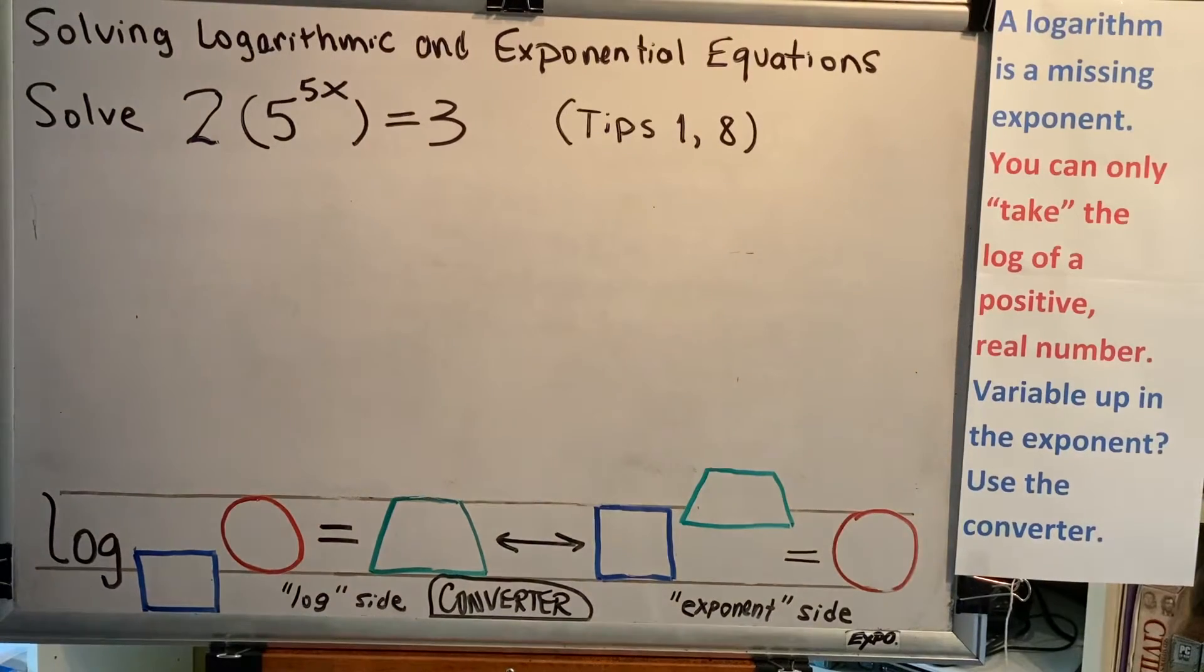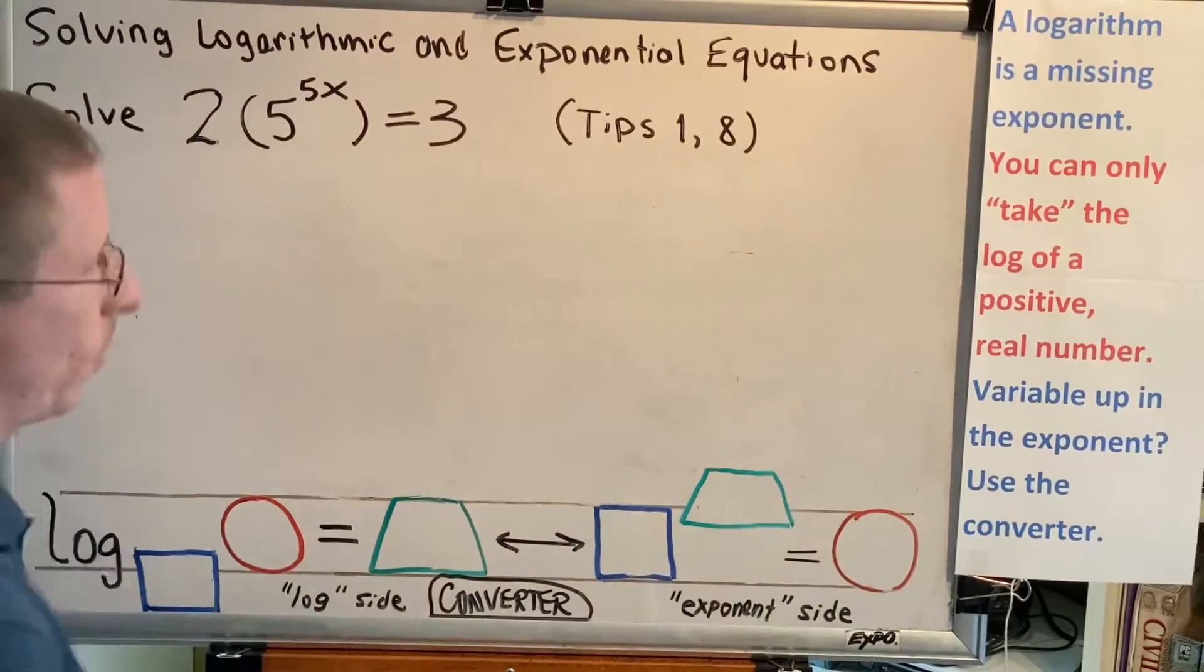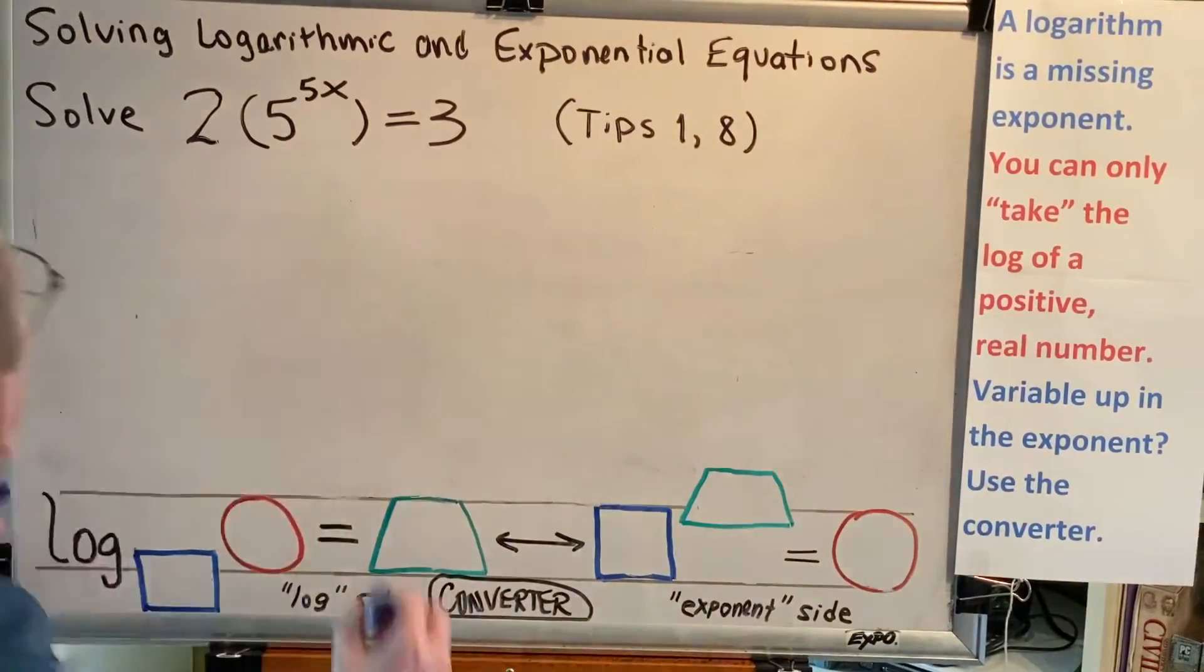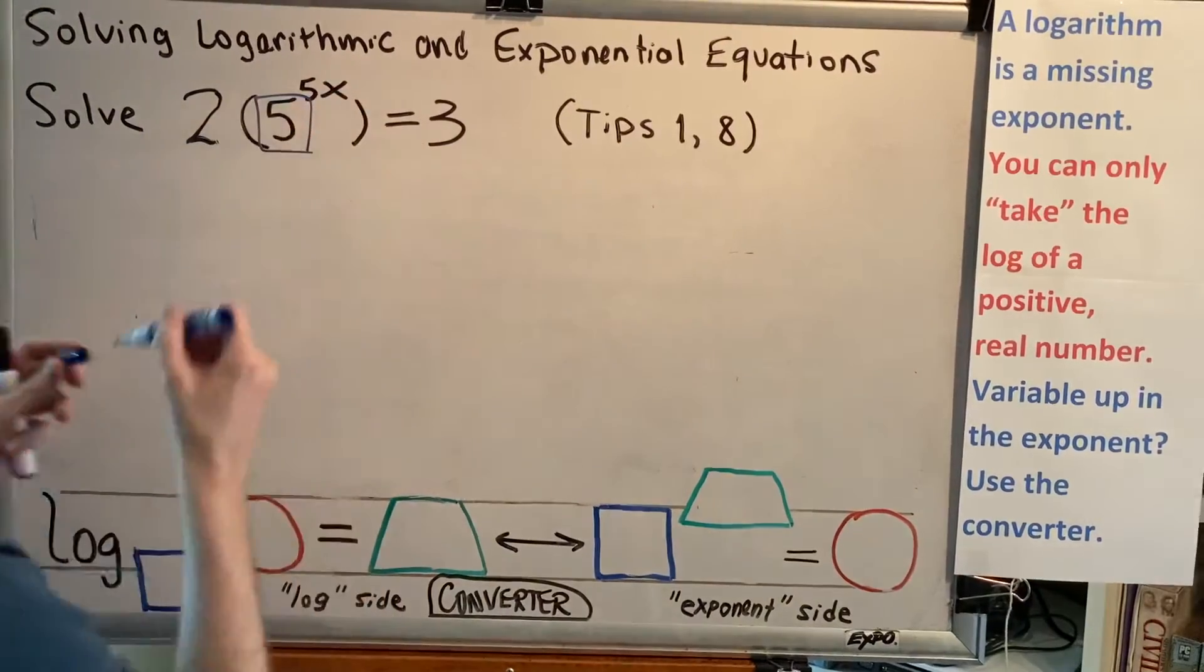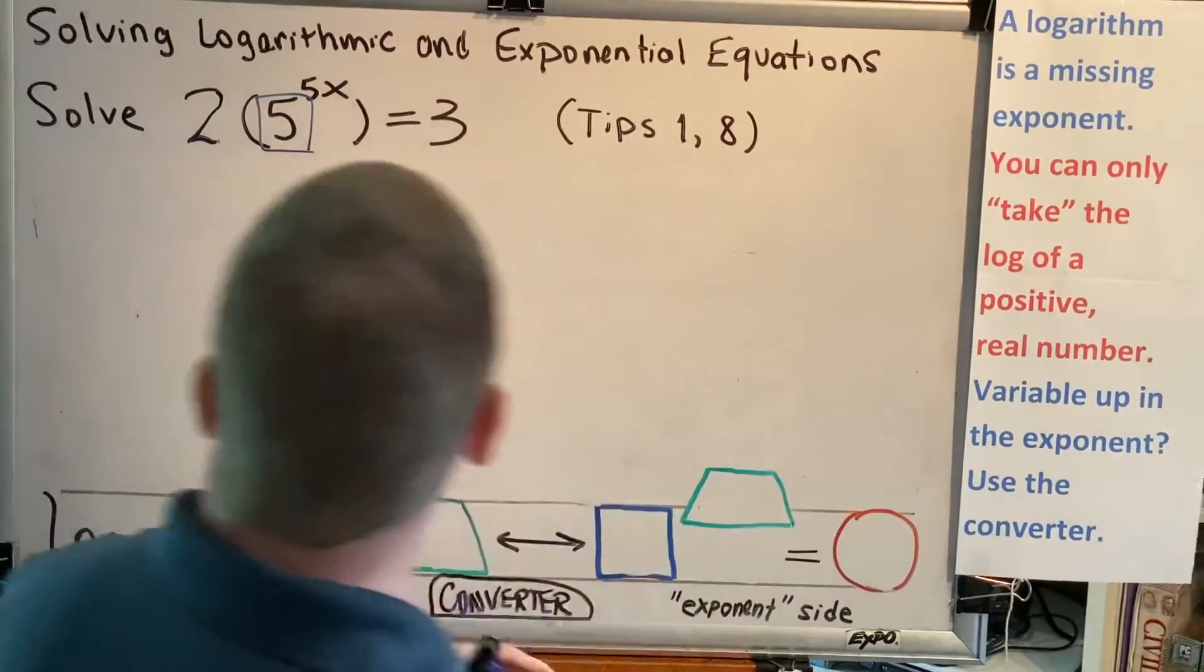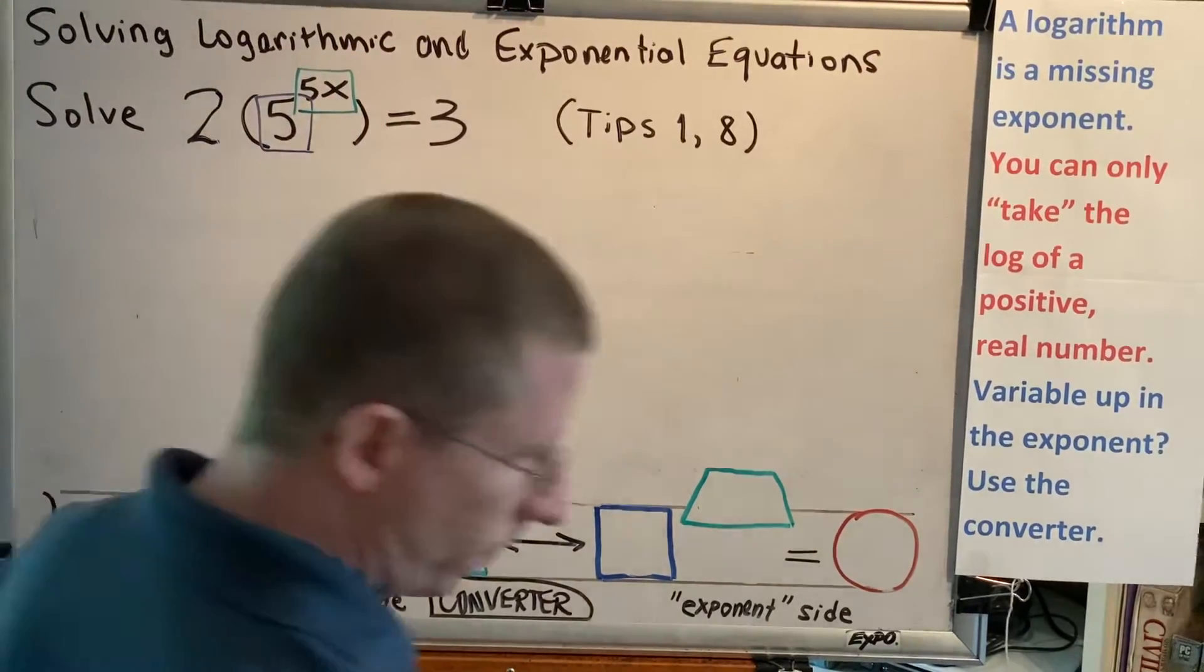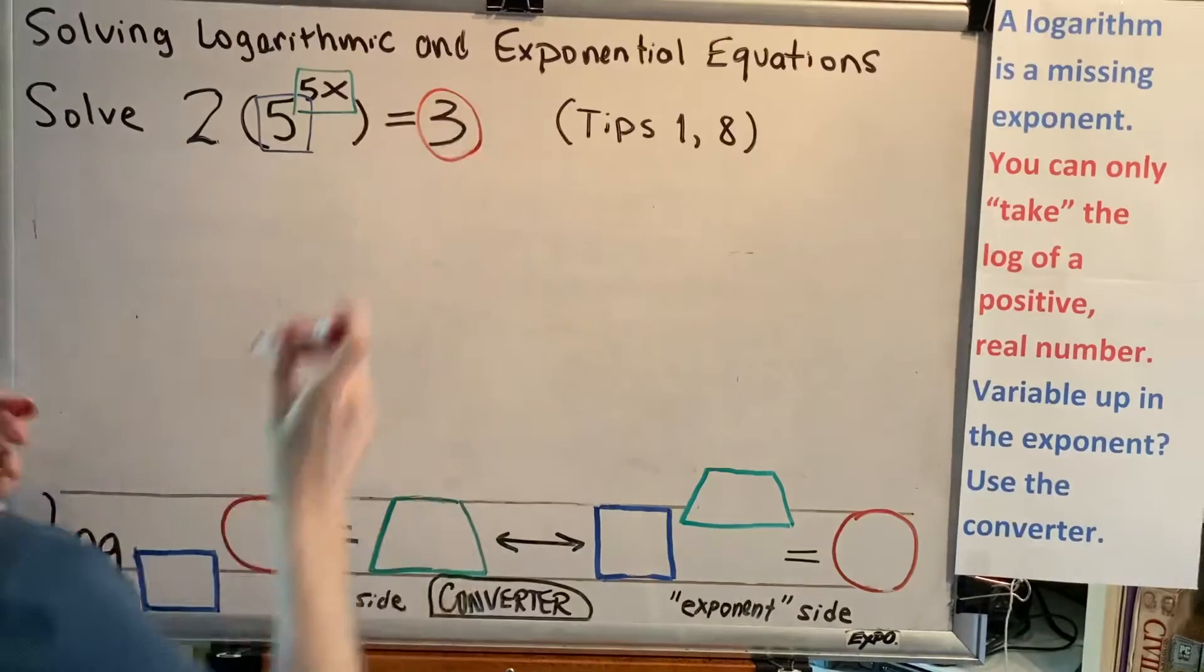Now, the exponent side of the converter has a place for three things: a base, an exponent, and an argument. Let's see if we can identify what those three things are in this problem. Well, our base is 5. Our exponent is 5x. And our argument is 3.